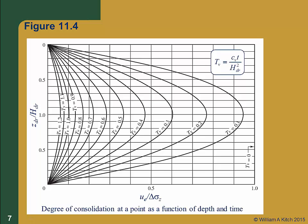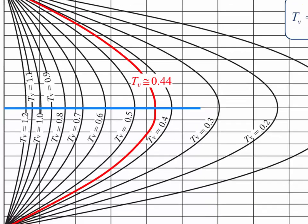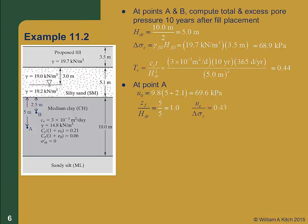We go to figure 11.4 and draw a line at z_dr over h_dr equal to 1. We want the answer when tv equals 0.44, so we interpolate between the 0.4 and 0.5 isochrones, sketching our own isochrone at tv equal to 0.44. Where this isochrone intersects the blue line, we draw a vertical line down to the x-axis and see that it corresponds to u_e over delta sigma z of 0.43. So our dimensionless excess pore pressure at point A is 0.43, and the true excess pore pressure is 0.43 times 68.9, which is 29.6 kPa. The total pore pressure at point A, 10 years after the fill is placed, is the static pore pressure plus the excess pore pressure: 69.6 plus 29.6, which equals 99.2 kPa.